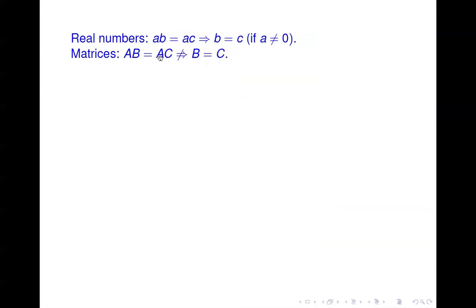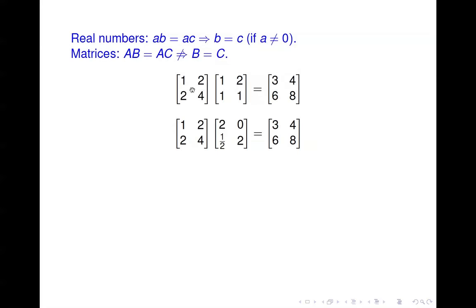Second warning: for real numbers, if A times B equals A times C and A is not zero, you can divide both sides by A and get B equals C. You cannot do that with matrices. If AB equals AC, that doesn't mean B equals C. Here's an example: A times B and A times C give the same matrix, but B and C are clearly different.